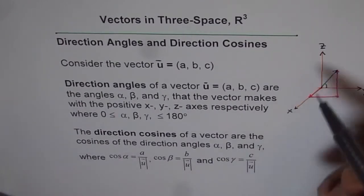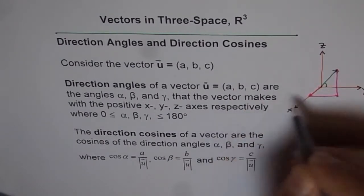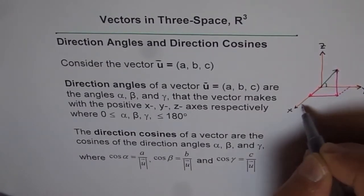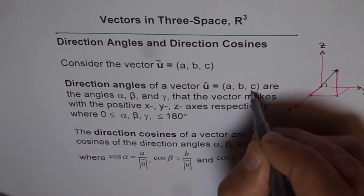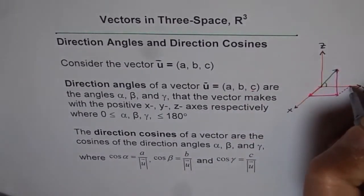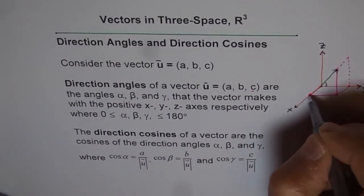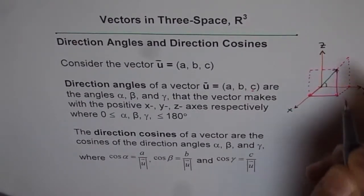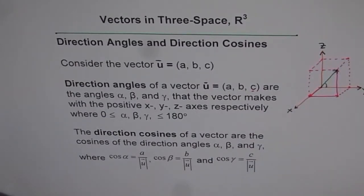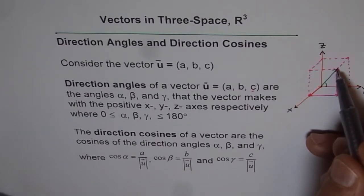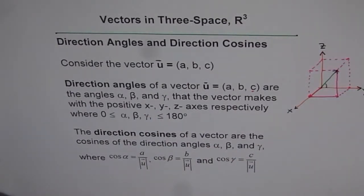Some students still have difficulty sketching a vector in R3. When we move A units towards X and B units towards Y, we complete a rectangle on the XY plane. From every corner of that rectangle, we can go up C units along the Z axis. Joining these points gives us a rectangular box, which shows the 3D effect. Vector U = (A, B, C) is the diagonal of this box from the origin.